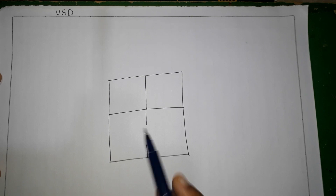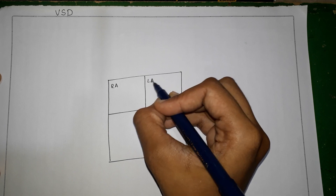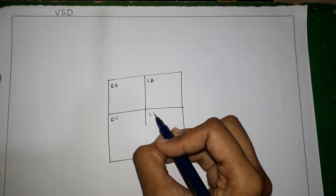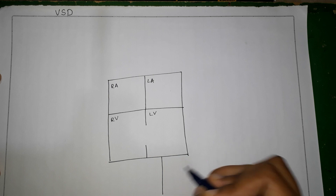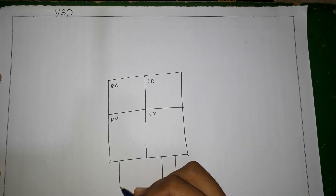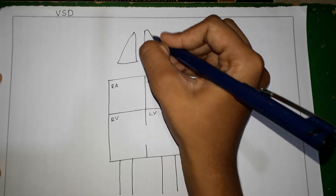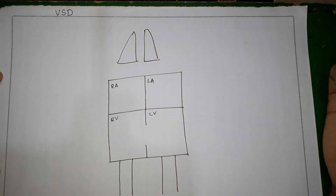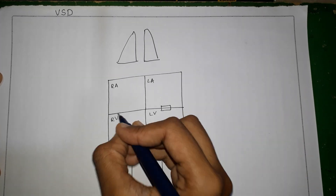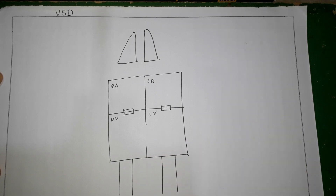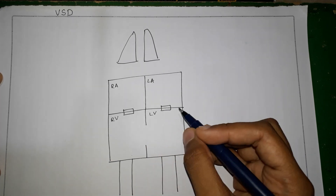To understand the hemodynamics involved in a ventricular septal defect, I've drawn a schematic diagram of the heart showing the right atrium, left atrium, right ventricle, left ventricle, the interventricular septum, and the ventricular septal defect. We also have the aorta, the pulmonary artery, and the lungs. To understand the clinical findings it's very important to understand the hemodynamics, so we'll start with blood flow occurring in the left ventricle.